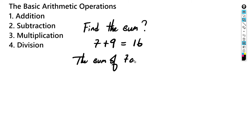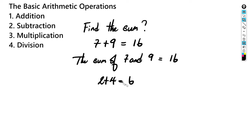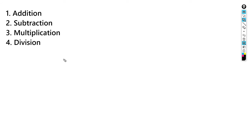The sum of seven and nine is equal to 16. Pretty easy. Let's do some more addition. Two plus four should be equal to six. Four plus one should be equal to five. So adding is clearly very easy. Alright, let's move on to subtraction.